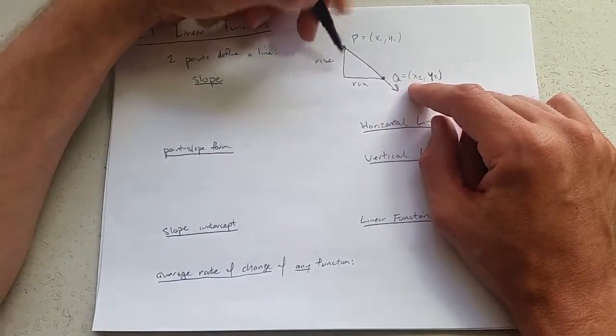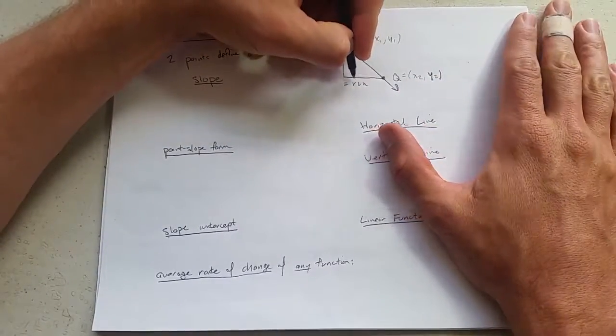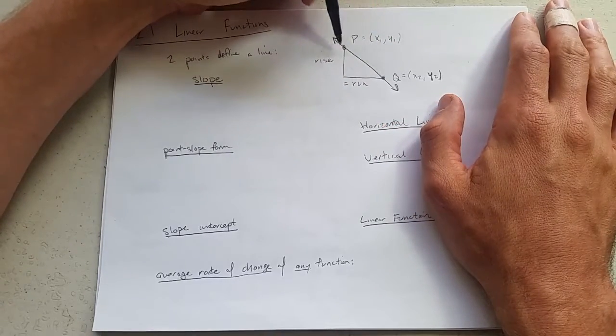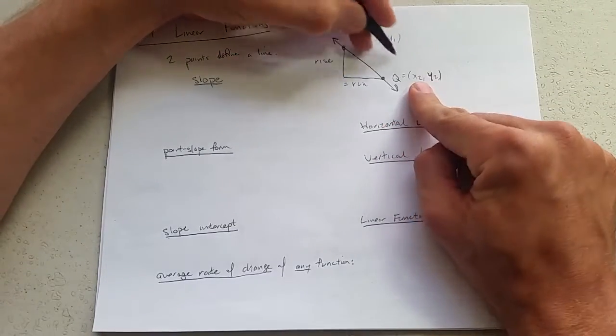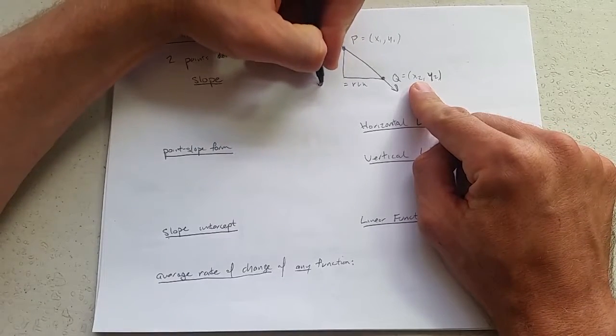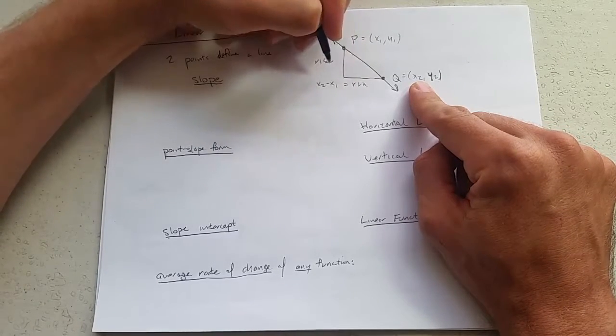So how do we compute rise and run? Run is just the difference between the x coordinates. So we'll go x2 minus x1. That's run.